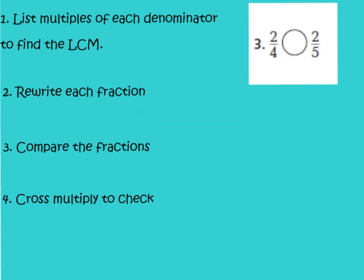Let's look at number 3. Number 3 is wanting us to compare 2-fourths and 2-fifths. Remember that the first thing we have to do is list the multiples of each denominator to find the least common multiple. So we have to list the multiples of 4 and 5. I want you to list the multiples of 4 and 5, find the least common multiple, and circle it. Go ahead and do this now and press play when you're ready to finish the problem.